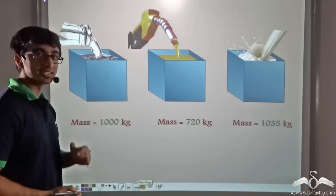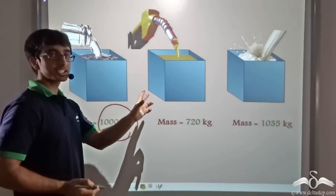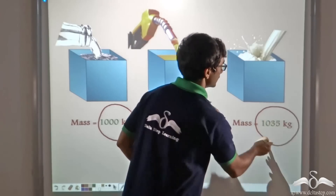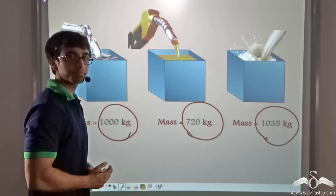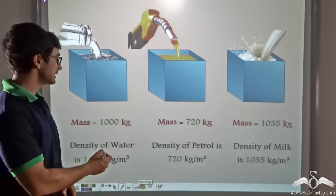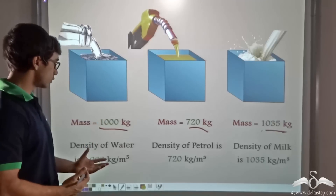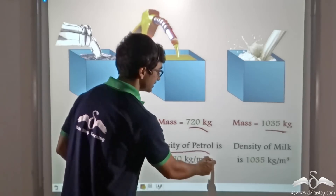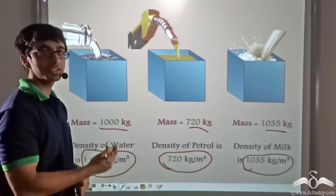We find that they do not weigh the same. The mass in the cube where water had been placed weighs 1000 kgs. The mass of the cube where petrol was poured weighs 720 kgs, whereas the cube where milk was poured weighs 1035 kgs. Since we had considered the volumes to be 1 meter cube and got their masses as 1000, 720, and 1035 respectively, we can say that the density of water is 1000 kg per meter cube, the density of petrol is 720 kg per meter cube, and the density of milk is 1035 kg per meter cube.